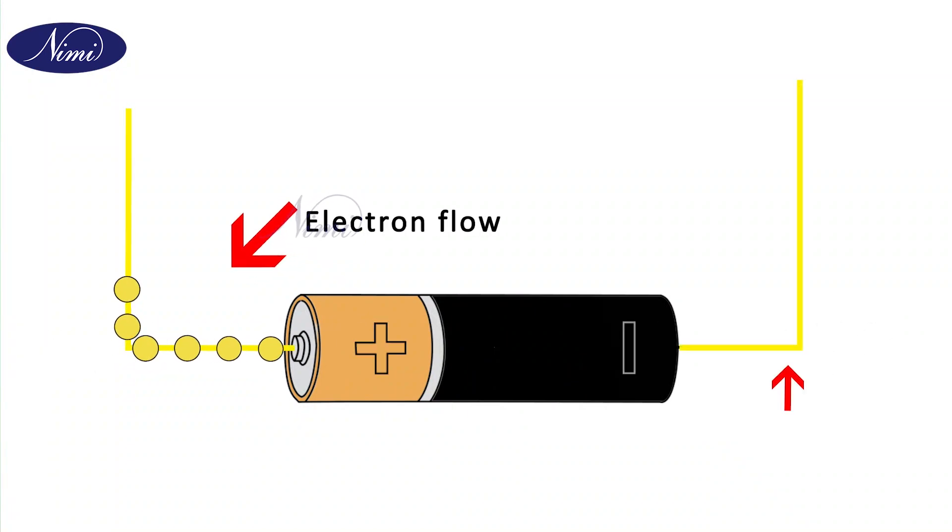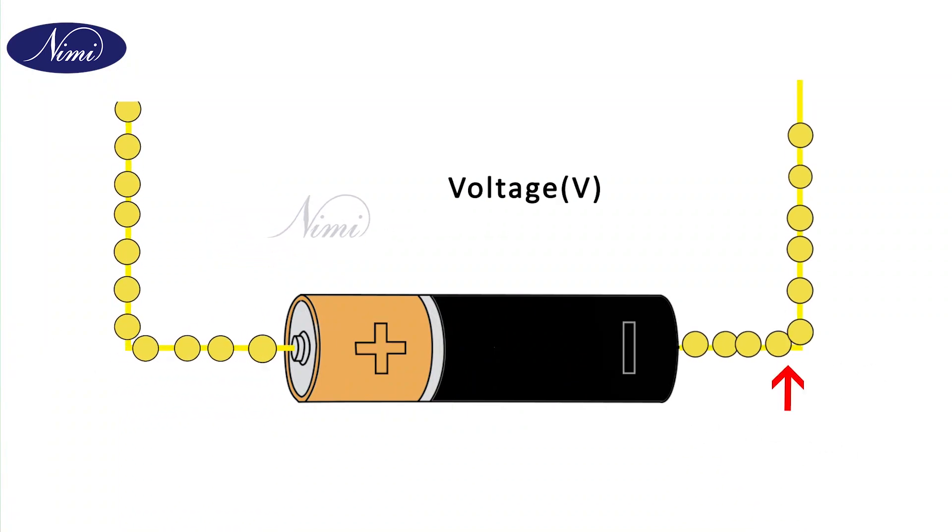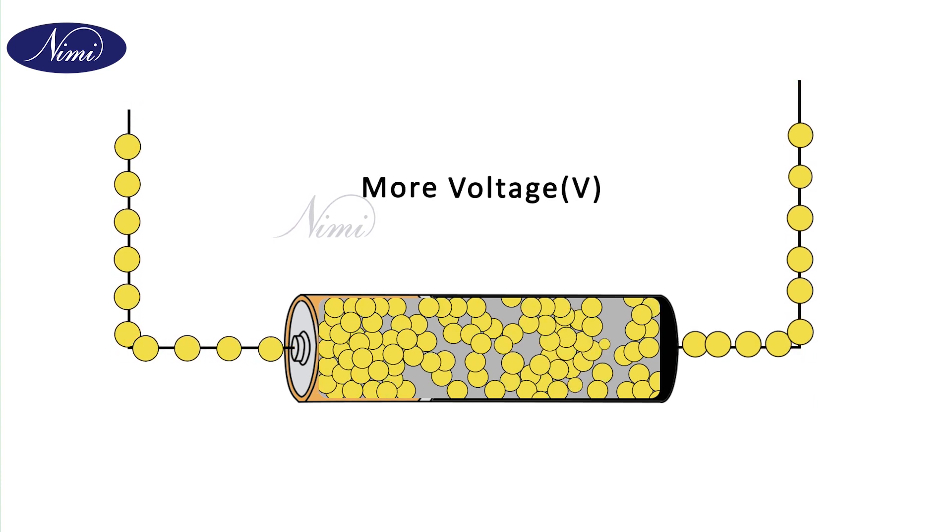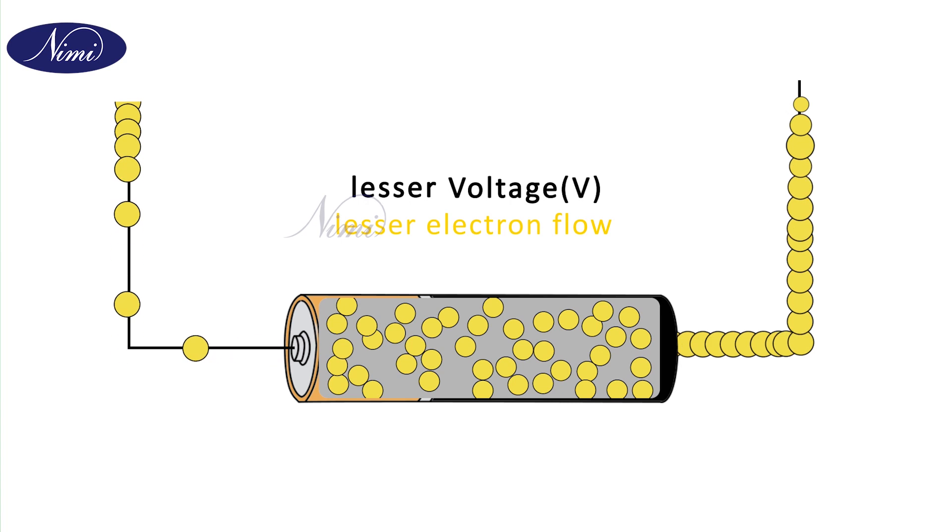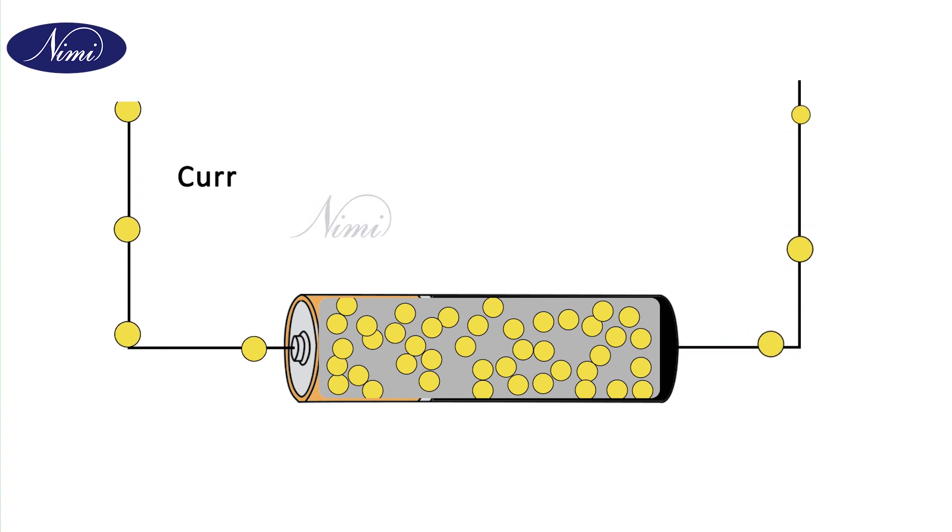electron flow in a conductor is caused by the voltage. More voltage will cause more electron flow and lesser voltage will cause lesser electron flow. Therefore, current is directly proportional to the voltage.